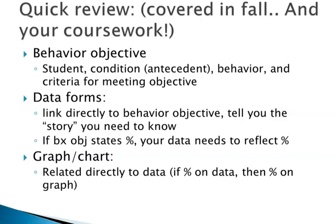When we talk about a behavior objective, behavior objectives need to be objective, clear and concise. The four components of a good behavior objective: first, you have to identify the student — who is expected to do this behavior? Then you identify the condition or antecedent — what environmental factors lead up to the behavior? You have to provide a topography of the behavior itself, a clear objective description. And you have to have a criteria for meeting the objective — how do I know when this behavior objective is met?